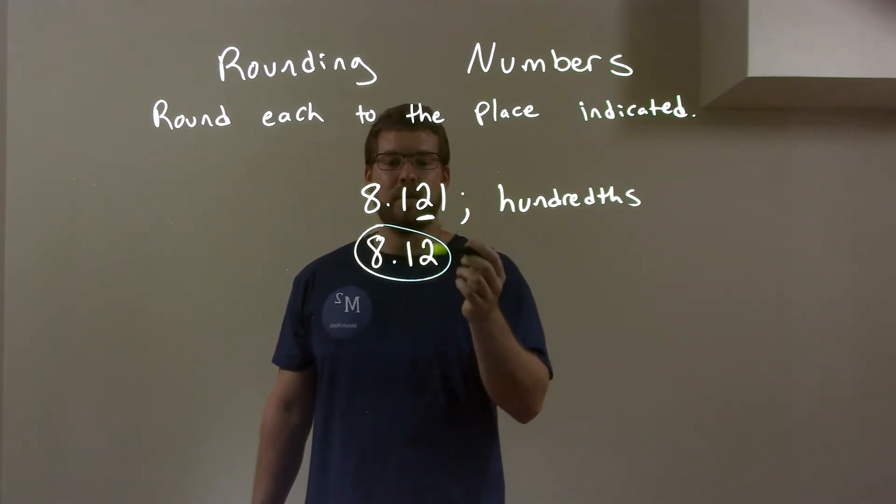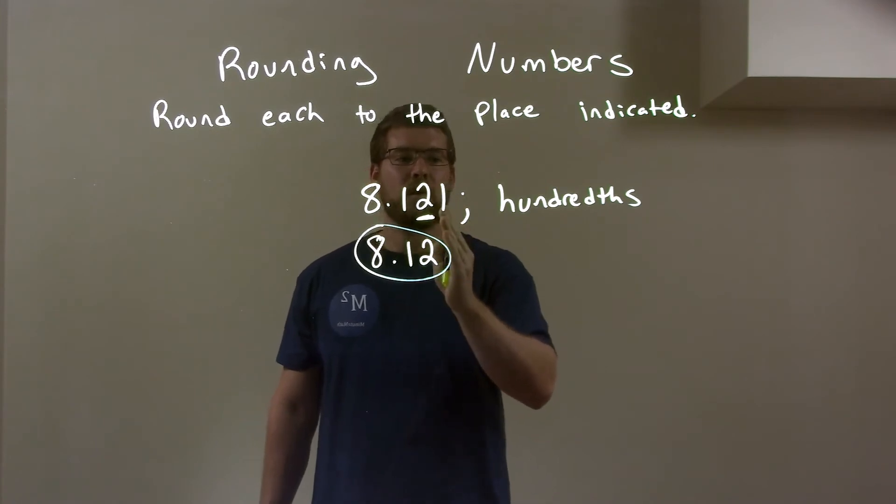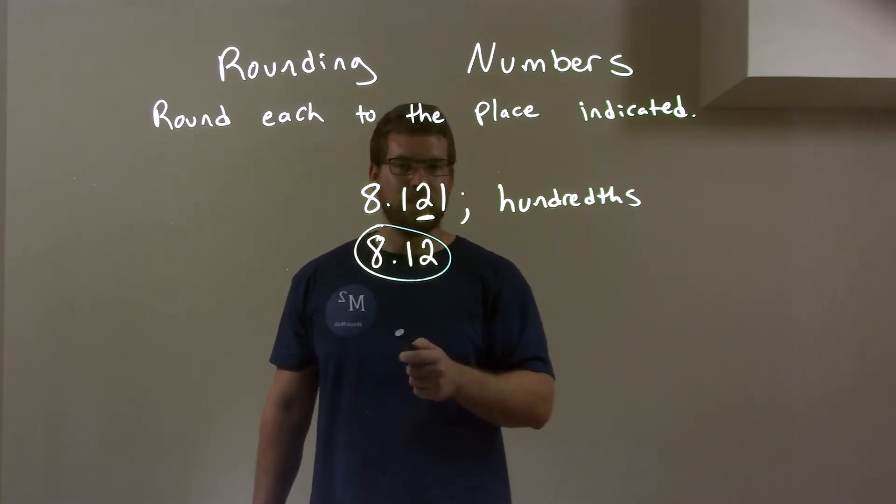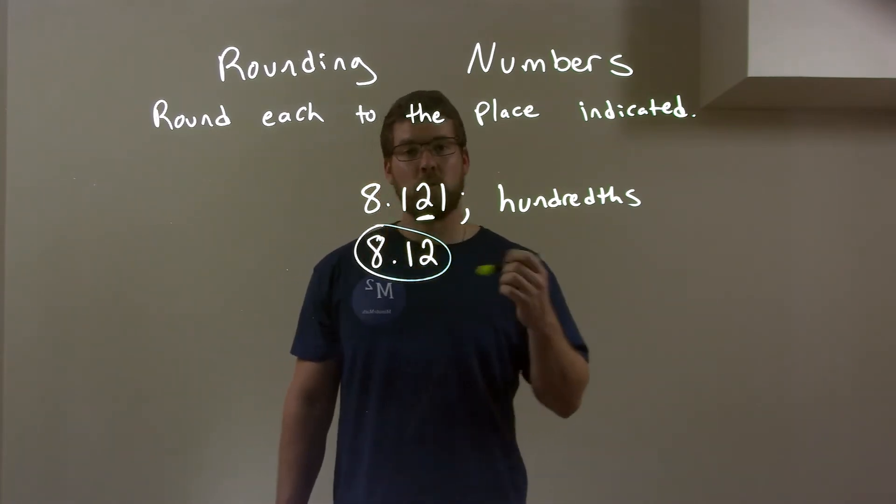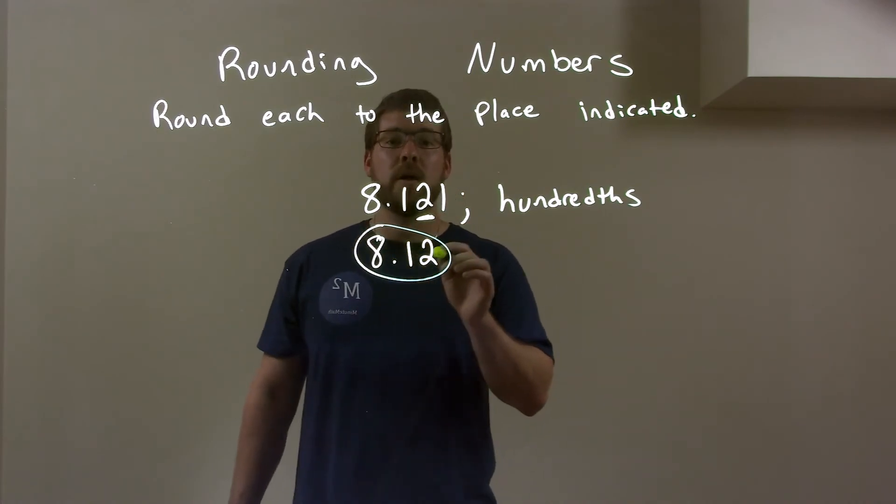Now, the 1 makes the 2 round down, so we keep the 2 the same. Disregard this 1, bring down the 8.1, and again we have our final rounded answer of 8.12.